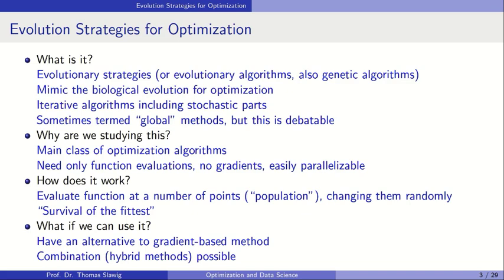An evolutionary strategy tries to mimic biological evolution and use this for optimization. There are also names like evolutionary algorithms and genetic algorithms. The differences are not very precise — sometimes evolution strategies refer to more real-valued problems, where we have real variables to optimize, while genetic algorithms sometimes refer to more discrete problems. These methods are iterative algorithms that include stochastic parts.